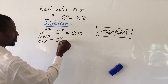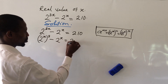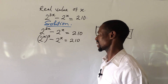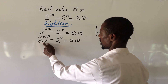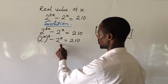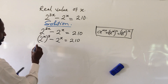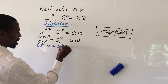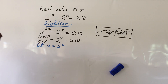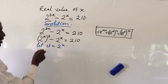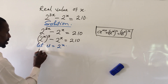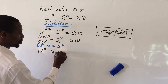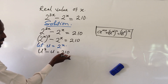So we now have: 2 to the power of x, bracket 3, minus 2 to the power of x, equals 210. We can see that 2 to the power of x appears in both terms. At this point, let u equal 2 to the power of x, so wherever we see 2 to the power of x, we substitute u.